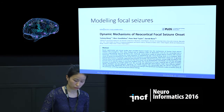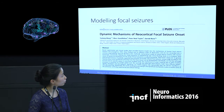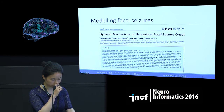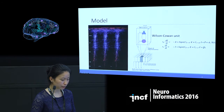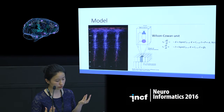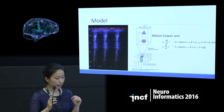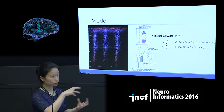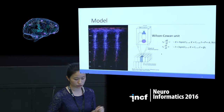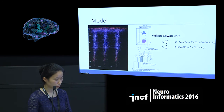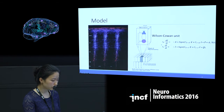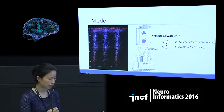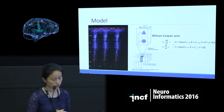The model I'm going to talk about is a previously published model, also available on ModelDB if anybody wants to look it up. The model essentially uses the idea that the computational unit of the cortex is a cortical column. We take many of these cortical columns and concatenate them to form a cortical sheet. Each column is modelled very simplistically by a Wilson-Cowan unit, which was sufficient to capture the dynamics we wanted.